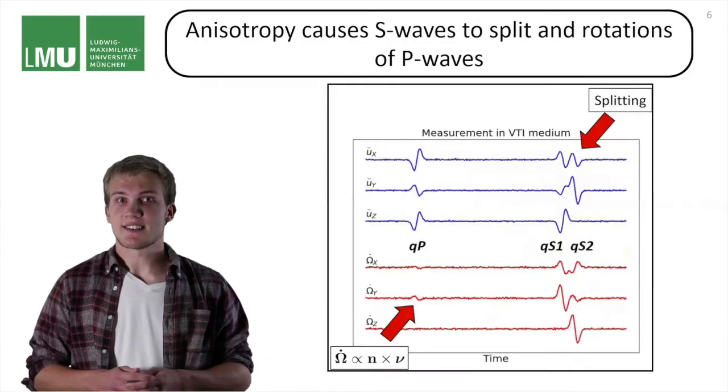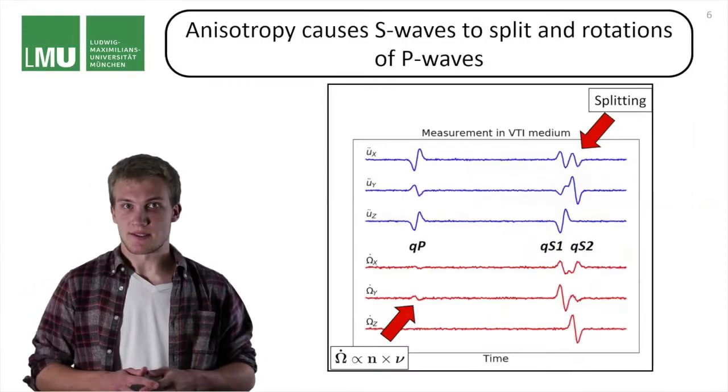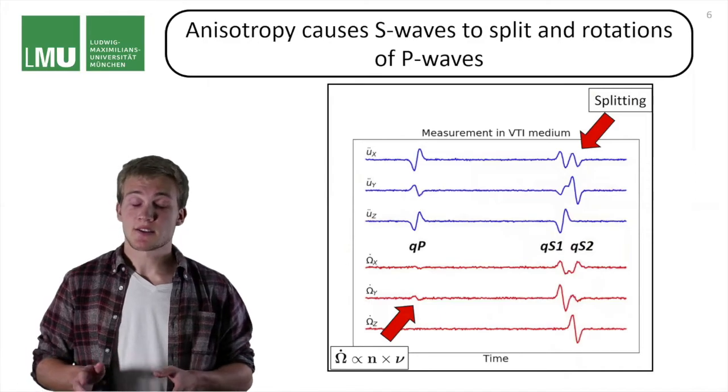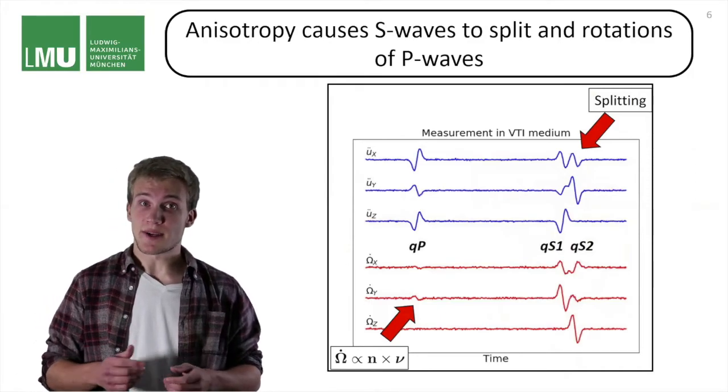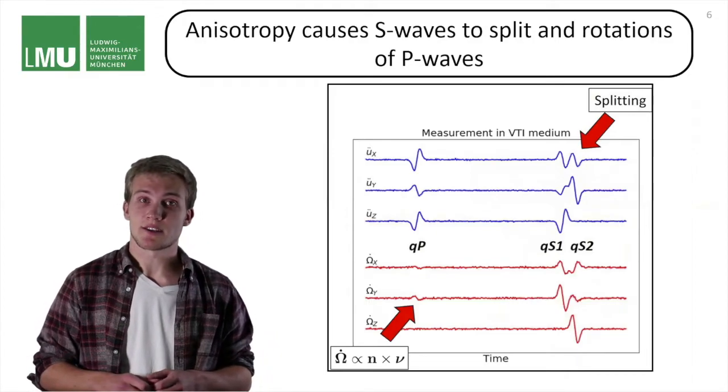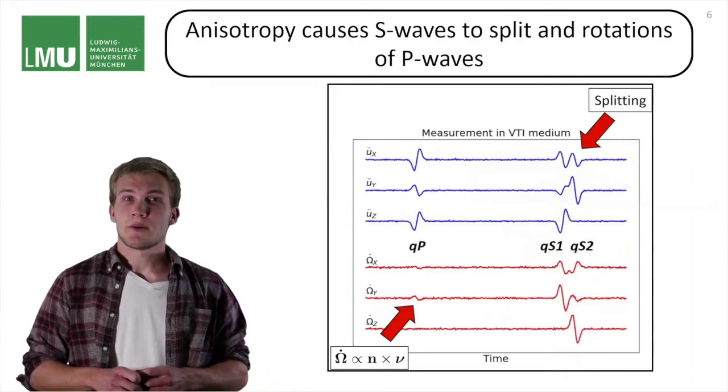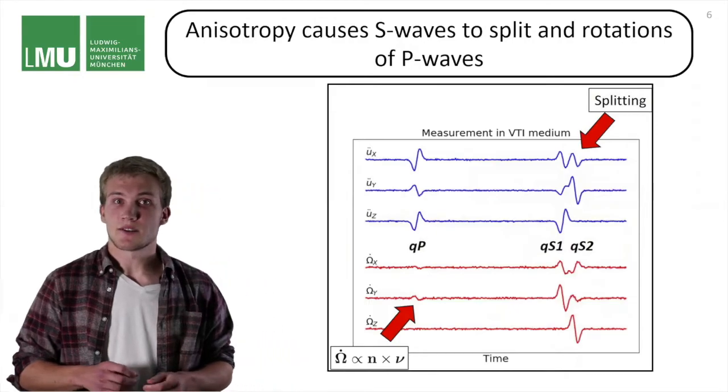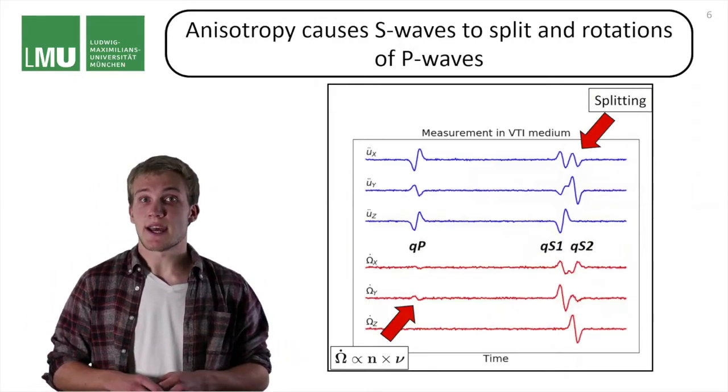Now that the rules are explained, let's have a look at some synthetic measurements. We are looking at a six component receiver, and the translation components are shown in blue and the rotational components are shown in red. We can see that there are two effects that appear due to the anisotropy.